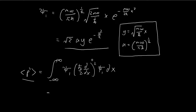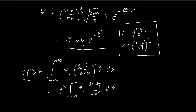We can do a slight manipulation of this term. I can pull out the constants, so I have a negative ℏ-squared. In the end, we have ξ₁ times the second derivative of ξ₁, dx squared dx. In order to calculate this expression, we now need to find what this is going to be equal to.